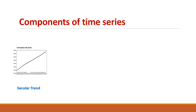If we take mortality rate, it is taking a downward movement — it is usually decreasing in nature, while others may be increasing in nature. Those kinds of variables are called secular trend or trend variables.